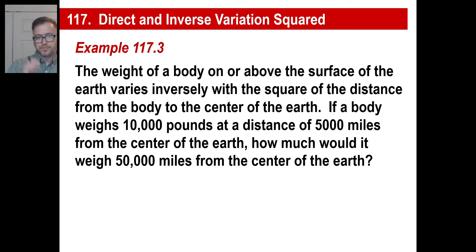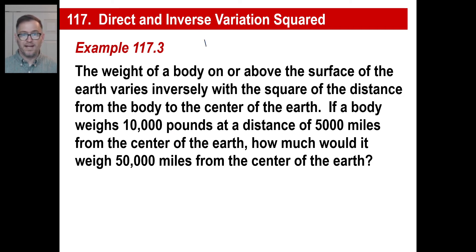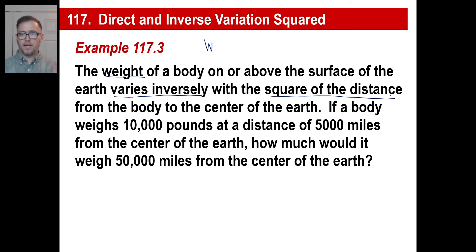Let's try one more. Go ahead and pause this, read it, and figure out your basic equation. The weight varies inversely with the square of the distance. The weight varies inversely, which means K is on top, and the square of the distance, so it's going to be D squared. This isn't hard stuff — you just pop in what you've got.